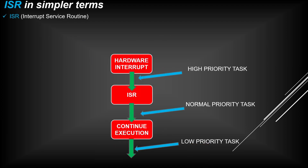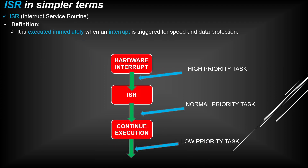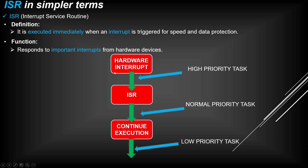ISR in simple terms: it is executed immediately when an interrupt is triggered, for speed and data protection, and responds to important interrupts from hardware devices. When a high-priority interrupt arrives, ISR executes it immediately, then moves to the next — it's a continuous cycle.